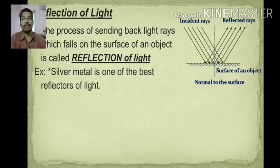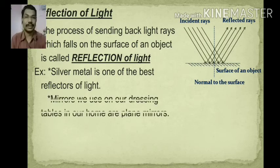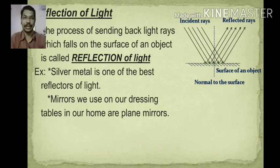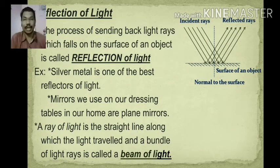Silver metal is one of the best reflectors of light. That is why it is used in the preparation of mirrors. The mirrors we use on our dressing tables at home are plane mirrors. A light ray is a straight line along which light travels, and a bundle of rays is called a beam of light.